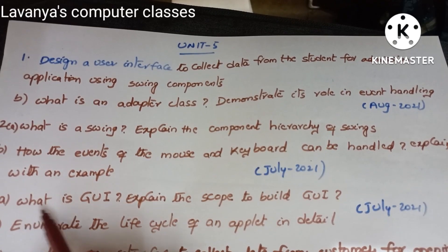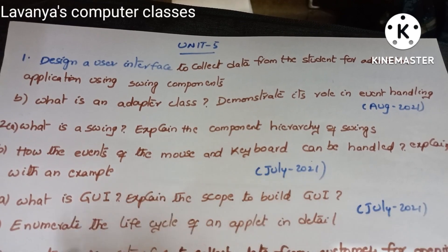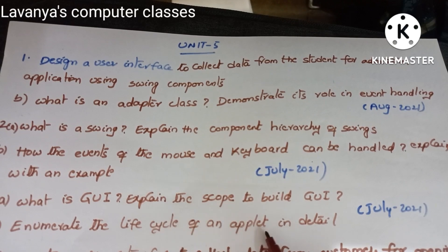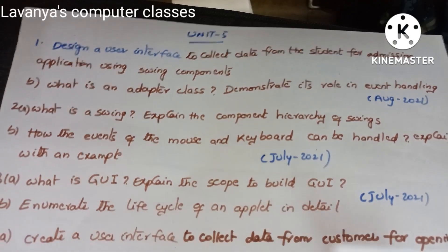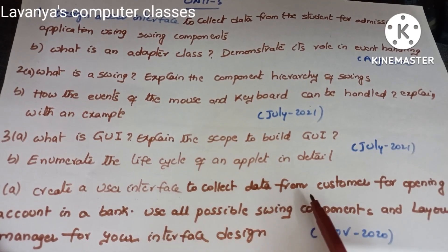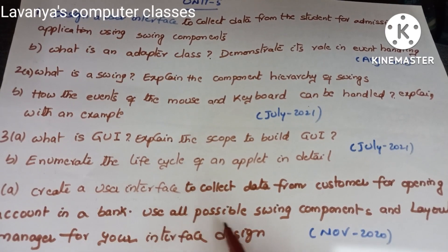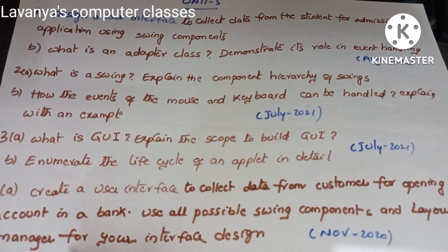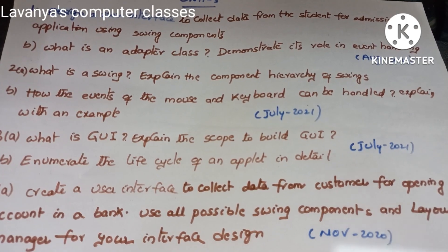'What is GUI? Explain the scope to build GUI.' 'Enumerate the life cycle of an applet in detail' — July 2021. 'Create a user interface to collect data from a customer for opening a bank account, using all possible Swing components and a layout manager for your interface design' — November 2020.